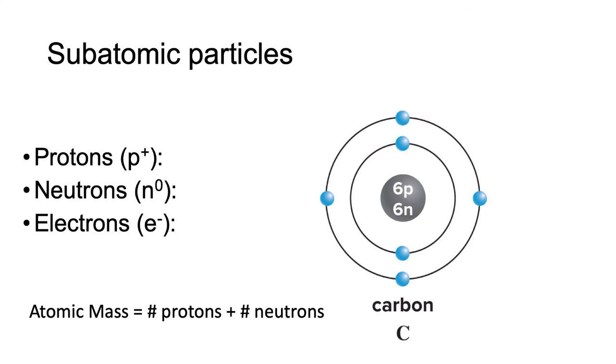In this atom of carbon, the number of protons is 6, and the number of neutrons is also 6, so the atomic mass would be 12. Elements cannot change the number of protons, but it can gain or lose neutrons.